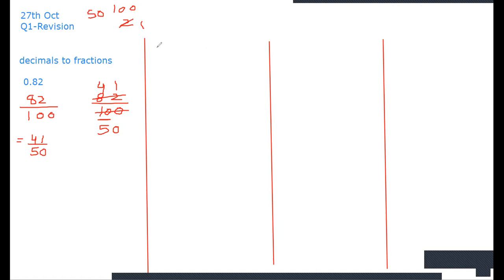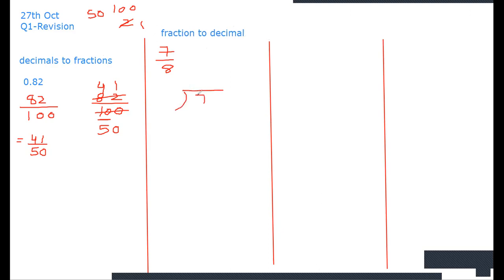Now convert fraction to decimal: 7 over 8. I want a decimal. This was decimal to fraction — now I want fraction to decimal. You know how to divide, right? I'll put the numerator inside and the denominator outside. But the numerator is small, so I need to put a point. Because 7 is small, I put a zero before the point, and when I put a point here, there has to be a zero here.